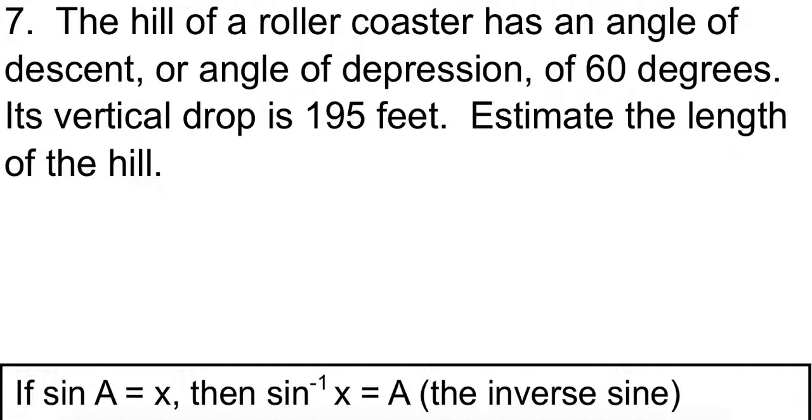Alright, so we have the hill of a roller coaster has an angle of descent or an angle of depression of 60 degrees. Its vertical drop is 195 feet. Estimate the length of the hill.